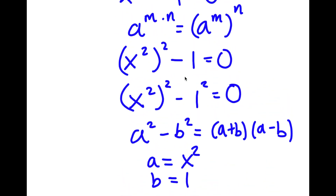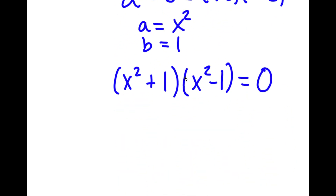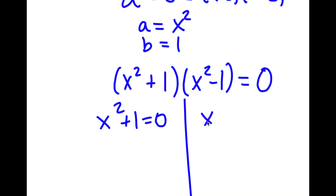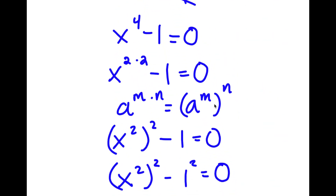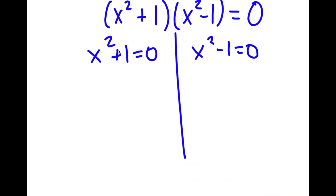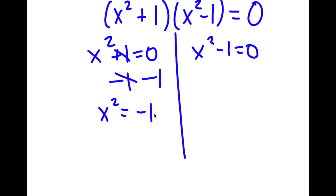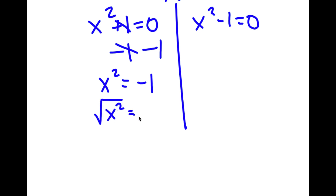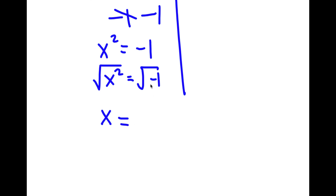Now this gives me two equations. I have x squared plus 1 is equal to 0, and I have x squared minus 1 is equal to 0. For x squared plus 1 equals 0, I'm going to subtract 1 on both sides — these two cancel out — and I get x squared is equal to negative 1. Now if I take the square root on both sides, the square root of x squared is x, and the square root of negative 1, as you may know, is i. So I have x is equal to positive or negative i.